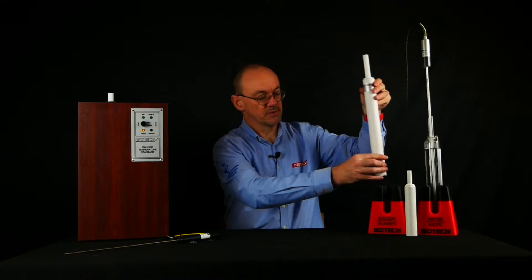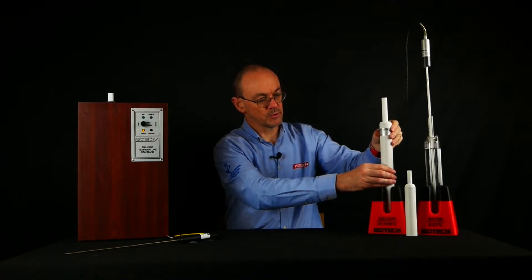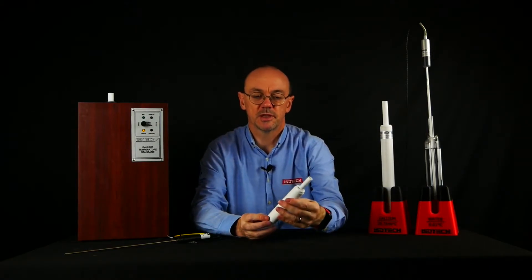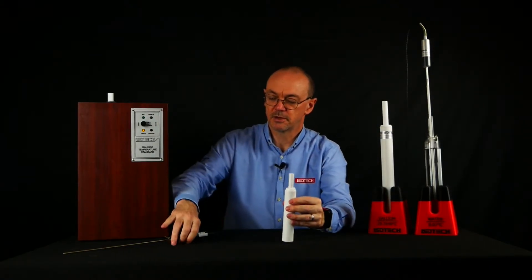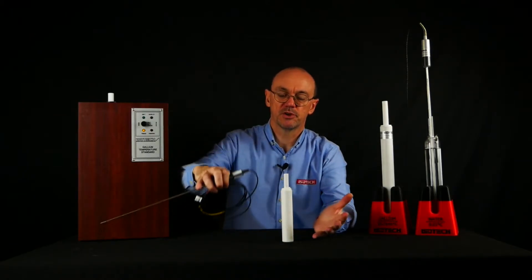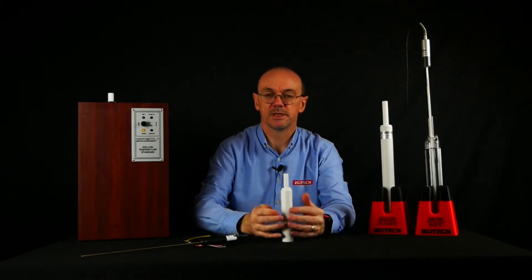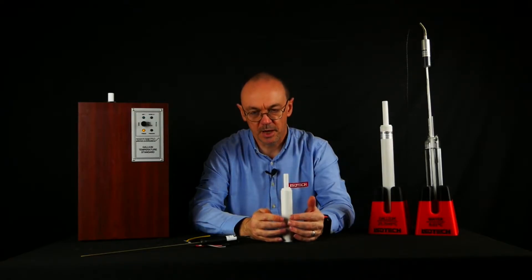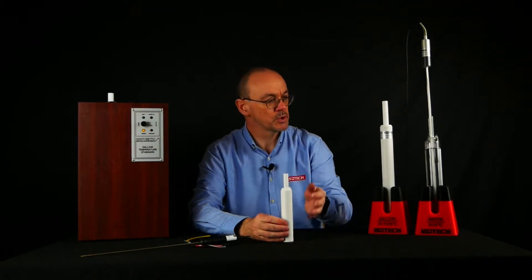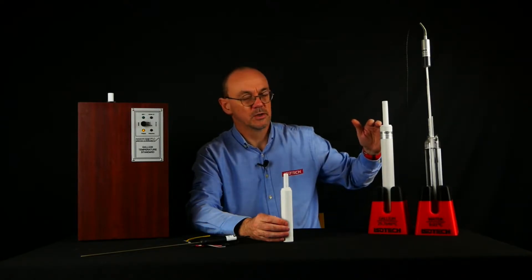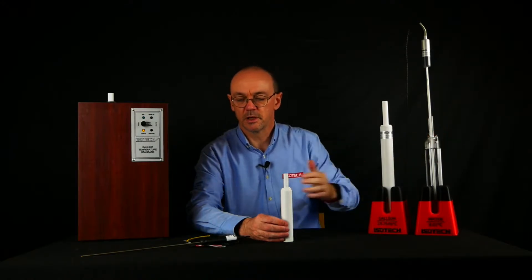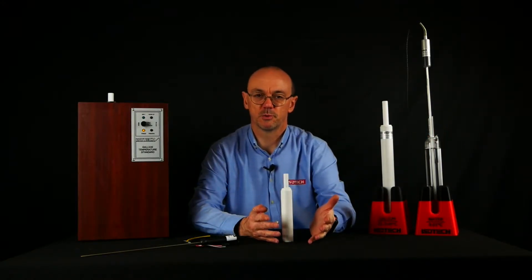You can get gallium cells in different sizes. This one's ideal for SPRTs. This is what we call a slim gallium cell. It's a smaller cell and can be used with smaller thermometers. The temperature inside the cell will be the same - the gallium melting point 29.7646 - but we would need a longer cell for a long SPRT to reduce immersion effects. With a smaller thermometer we can use a smaller cell.